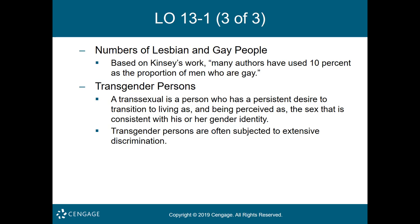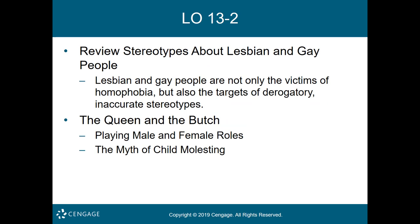Transgender persons are often subjected to extensive discrimination. If they come out during adolescence, they are likely to be shunned, victimized, and discriminated against by their peers. Family may present another challenge — some youth experience acceptance from family while others face great struggles. Rates of suicidal ideation and life-threatening interactions among transgender youth are high. Transgender youth are also at higher risk of becoming homeless, and homelessness can lead these youths to offering sex to survive, which increases the risk of sexual and physical abuse.